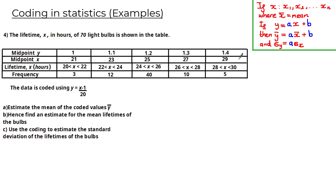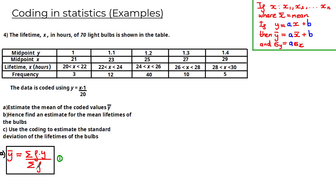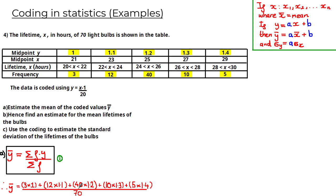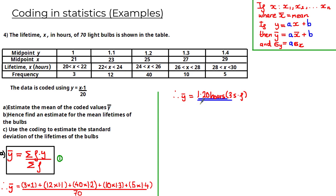Substituting the highlighted values into the formula, the numerator is (3×1) + (12×1.1) + (40×1.2) + (10×1.3) + (5×1.4), all over 70, the total frequency. Working this out gives ȳ = 1.20 hours, rounded to three significant figures. Don't forget your units of measurement in these calculations.